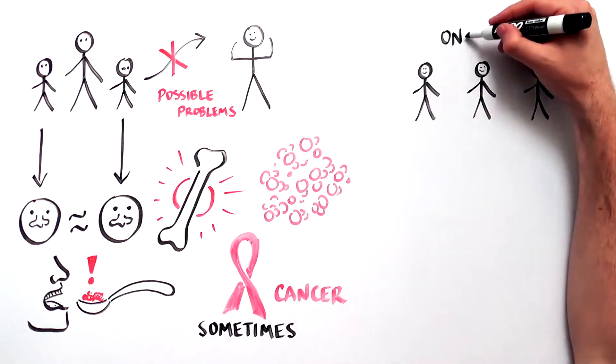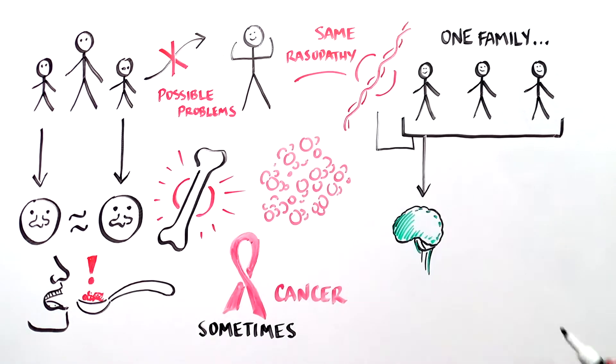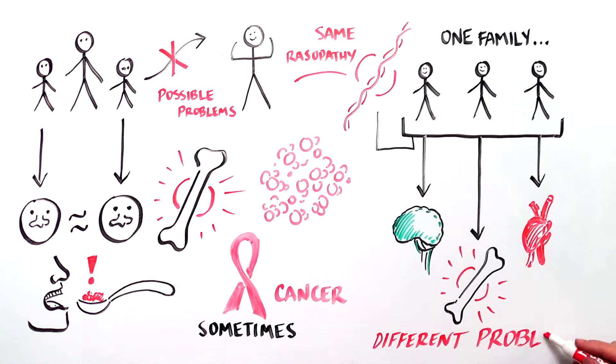But not everyone with a RASopathy will have the same problems. Even people within a family who have the very same gene change can be affected differently. Researchers are trying to understand why this happens and to find other genetic causes of RASopathies.